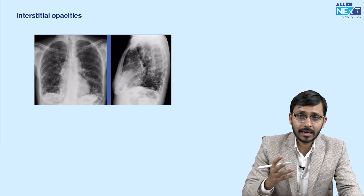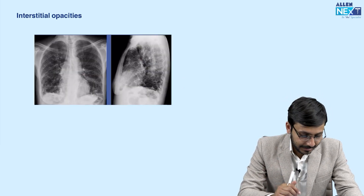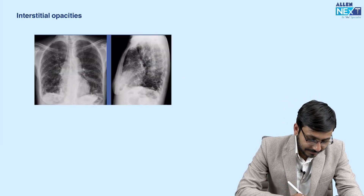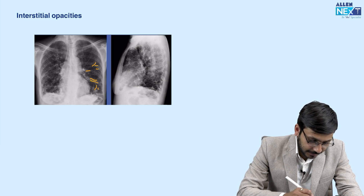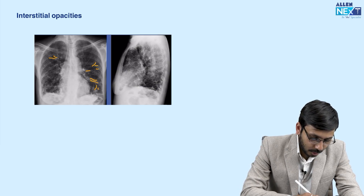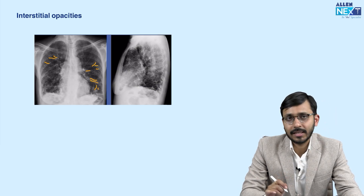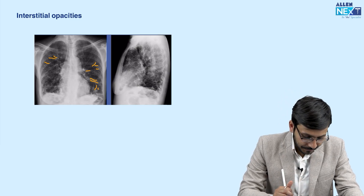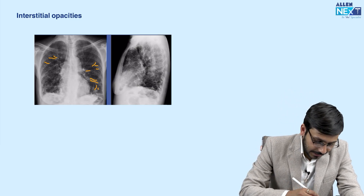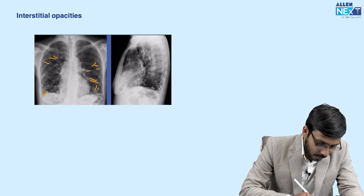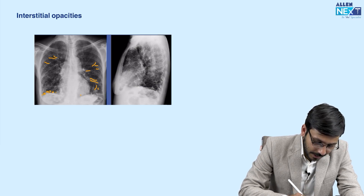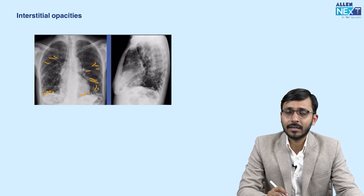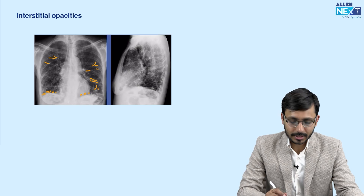Another example of interstitial opacities — these linear fine branching opacities that you see in both lungs tell you that they are interstitial opacities. Similarly, in the lower lobe you see honeycombing, which also signifies that it is an interstitial pathology.